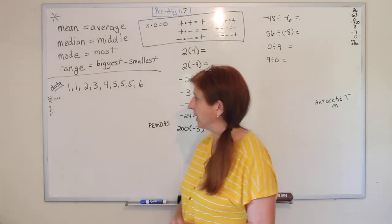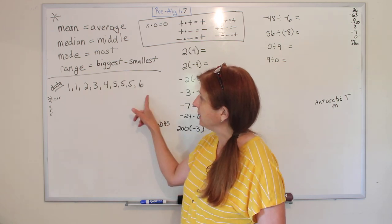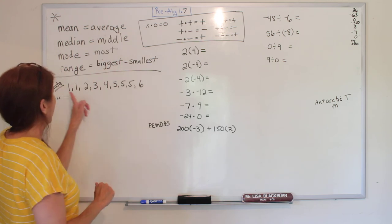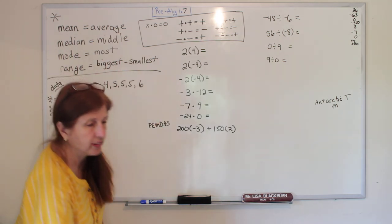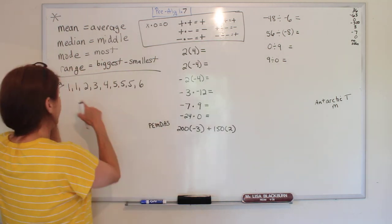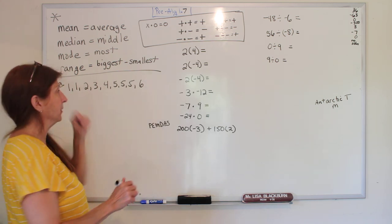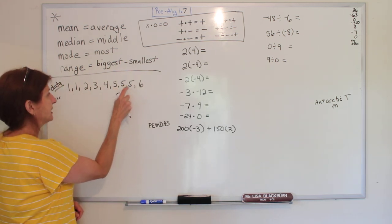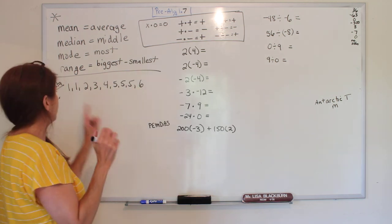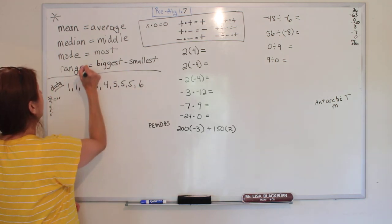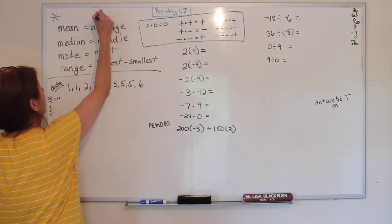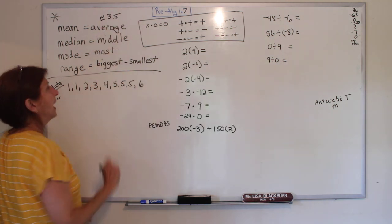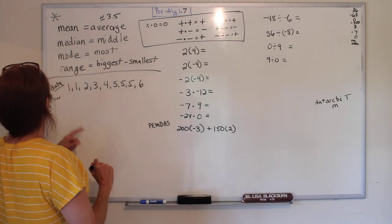So here's some data. And so first, to get the mean, the average, we add them all up, and you would do that on your calculator, and I've already added it up, it's 32. And then you count how many you have - one, two, three, four, five, six, seven, eight, nine. So I do 32 divided by 9, and my mean is about equal to 3.5.